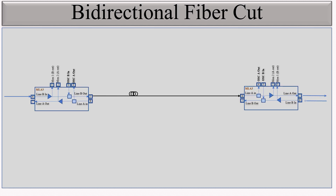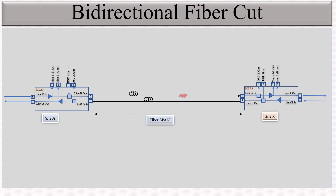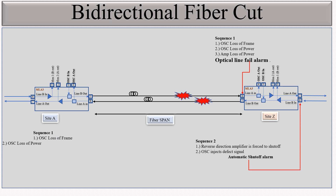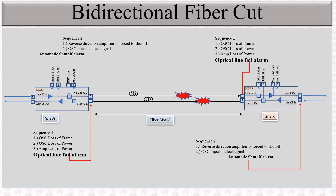For the bidirectional fiber cut, you can see the same setup. The fiber cut is happening on both sides. Sequence 1: OSC loss of frame, loss of power, amplifier loss of power, and optical line fail — this optical line fail appears on port number 8. Sequence 2: the reverse direction amplifier is forced to shut off and we get automatic set-off on port number 6. Here again we get the optical line fail alarm on port number 8, and we get automatic set-off on port number 6.